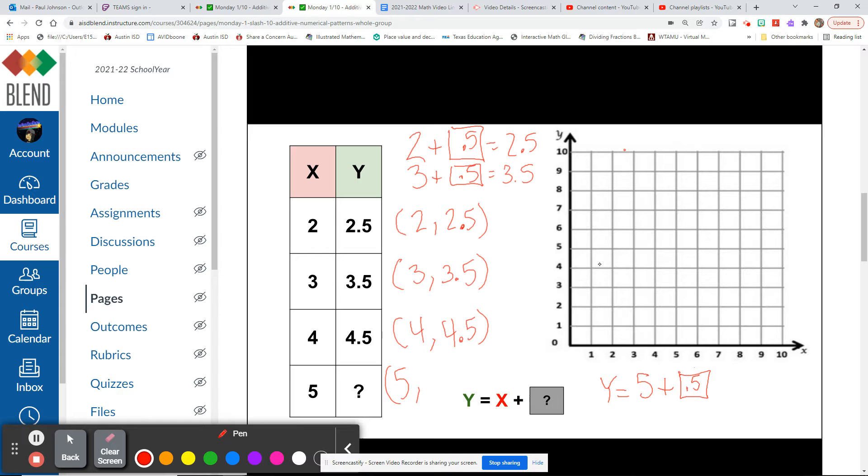So by this pattern, it looks like we're adding 5 tenths to all of our x values. That would make our y value for 5, 5 and 5 tenths. By adding 5 tenths, we're using the formula and we got our answer. Y is equal to 5 plus 5 tenths because y equals our x value plus 5 tenths. Now let's go ahead and graph all of our points.